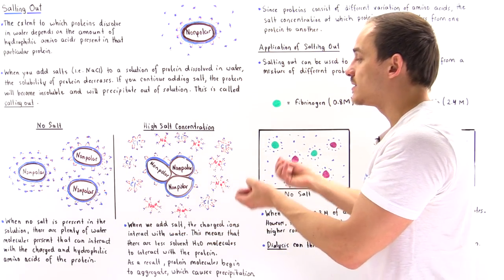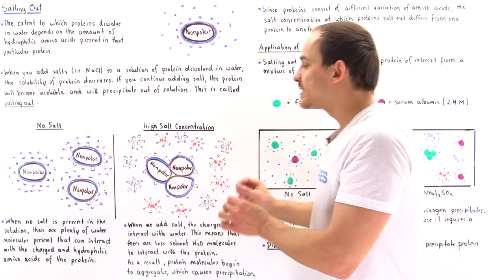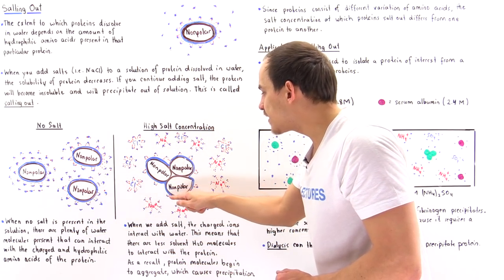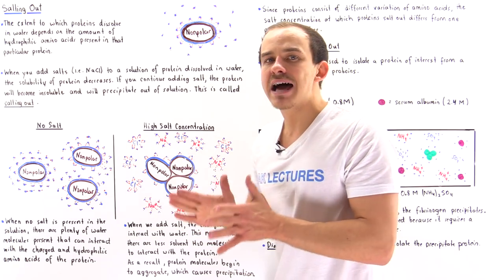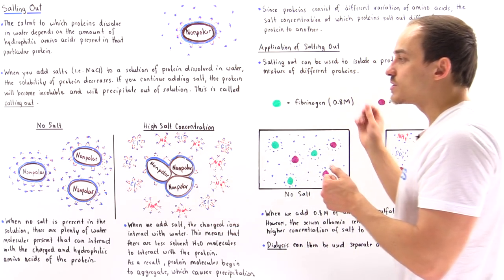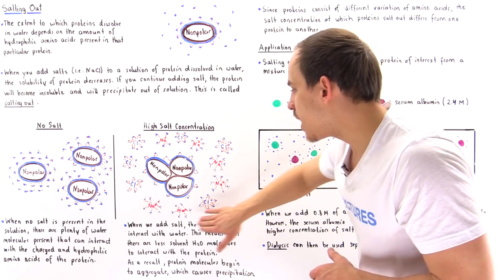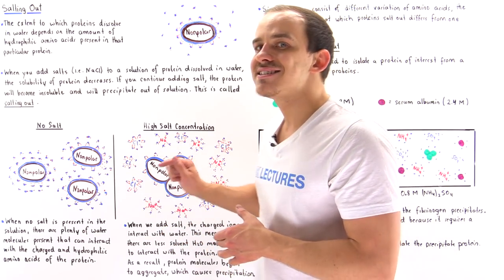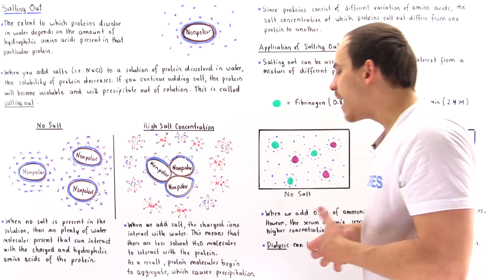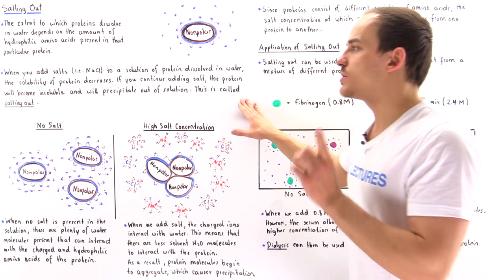When the protein structure is destabilized, the proteins begin to aggregate. By interacting between the nonpolar sections, aggregation stabilizes the structure of the entire aggregate molecule. As we add salt, some water molecules that were interacting with the protein are now forming hydrogen bonds with the dissolved ions, leaving fewer hydrogen bonds to stabilize the protein. The protein aggregates, which stabilizes its structure by decreasing the surface area exposed to water. This causes precipitation and crystallization out of the solution — this is salting out.